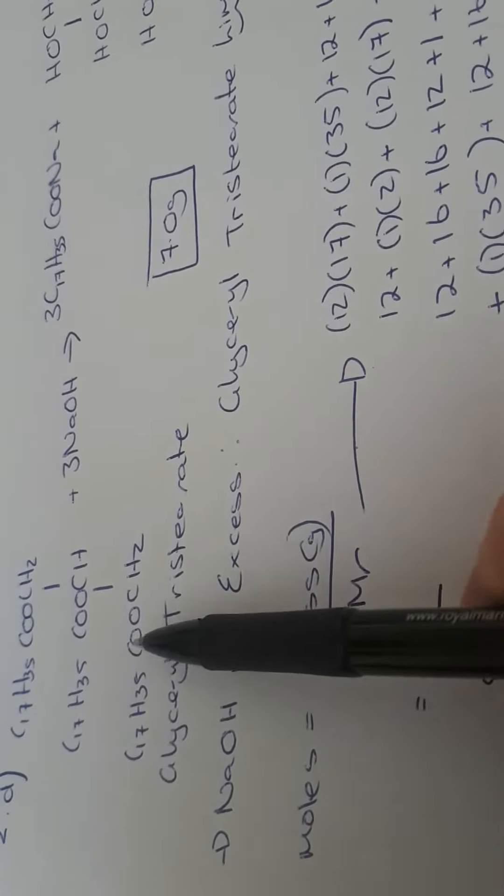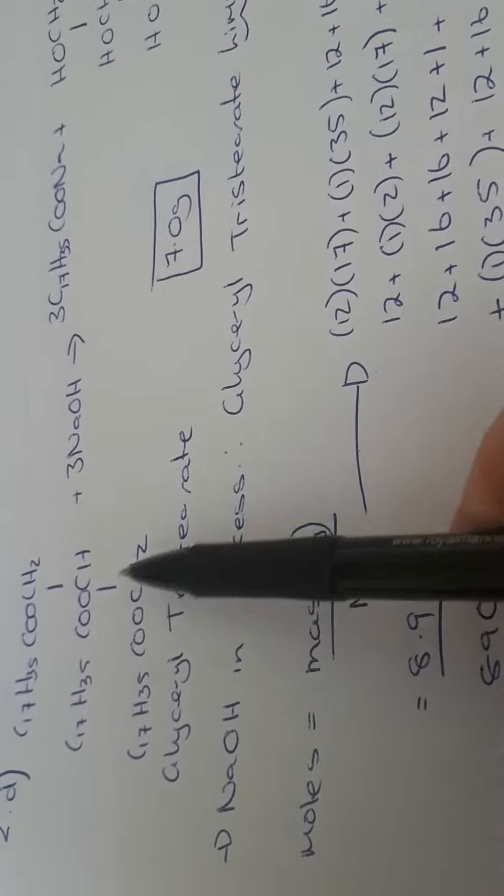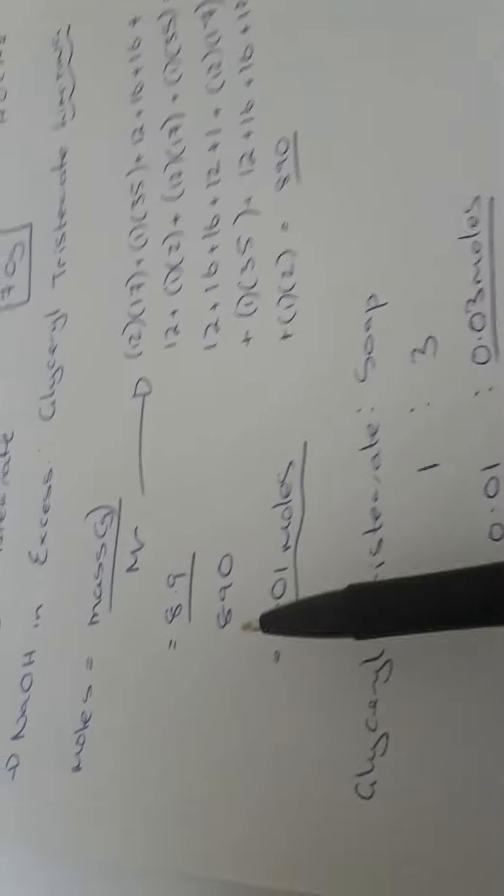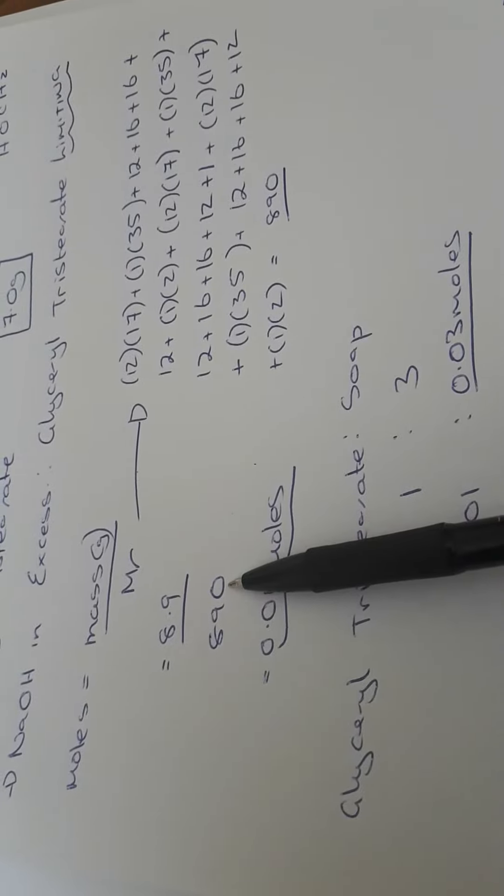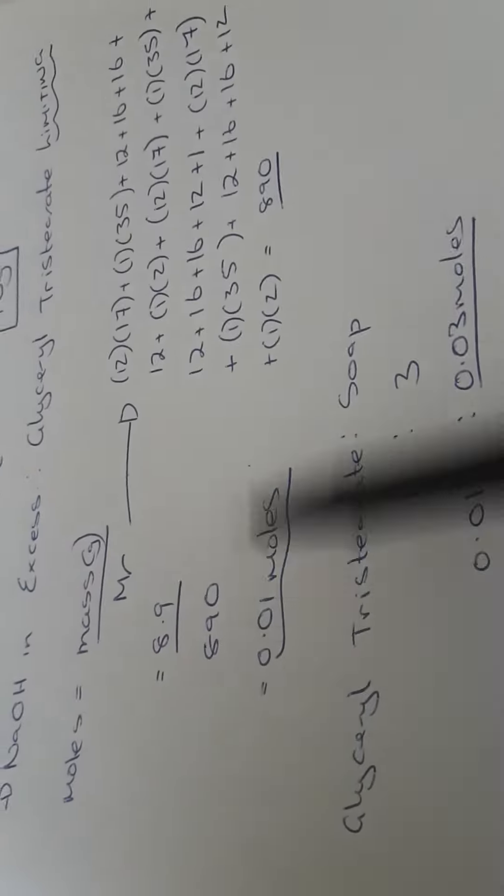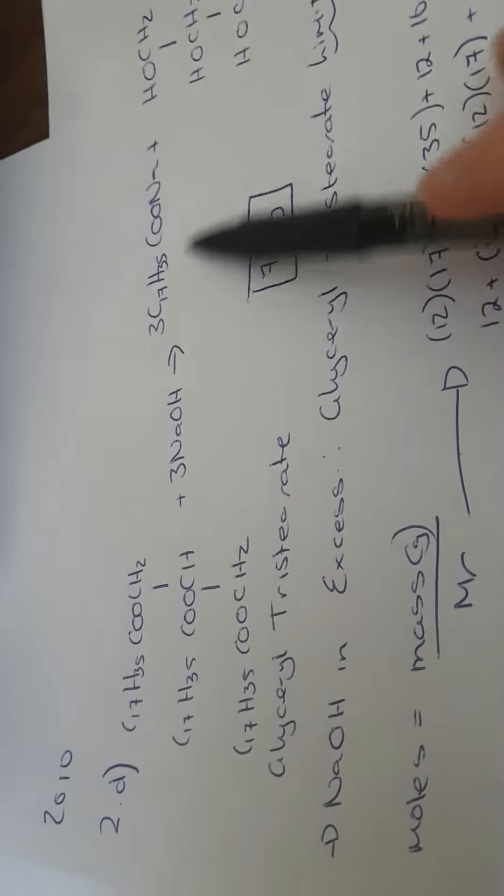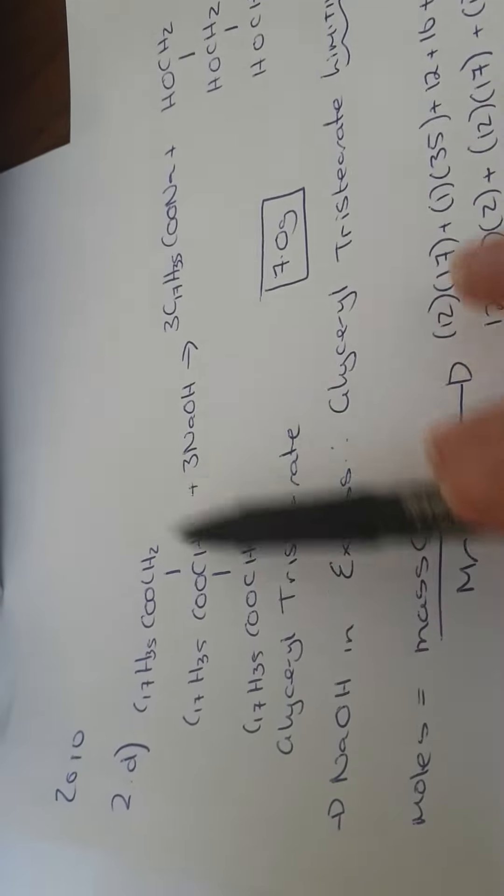That gives me a total of 890. I divide 8.9 divided by 890 and that gives me 0.01 moles. Anytime we're looking for the amount of product formed we always set it up with the ratio.